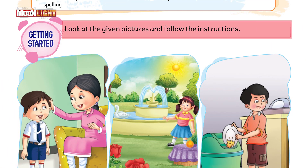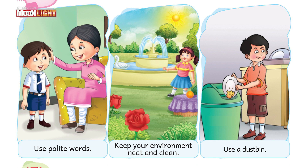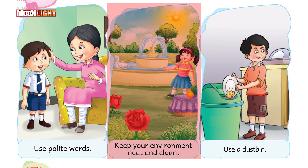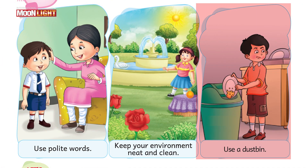Look at this picture — it means that we should use polite words and we should be very kind with others. In this picture we can see that the environment is very neat and clean, so that's why it is looking too beautiful. It should be our habit that we should keep our environment neat and clean. Looking at this picture, you should understand that we should use the dust bin to discard anything — we should not throw rubbish on the floor.